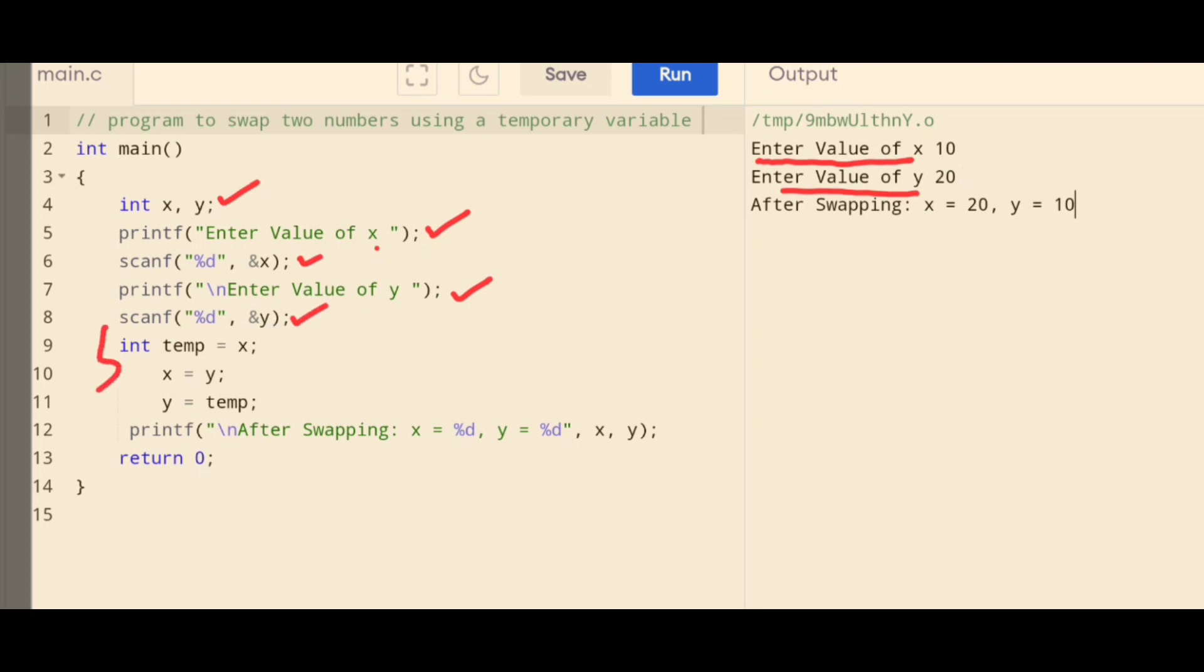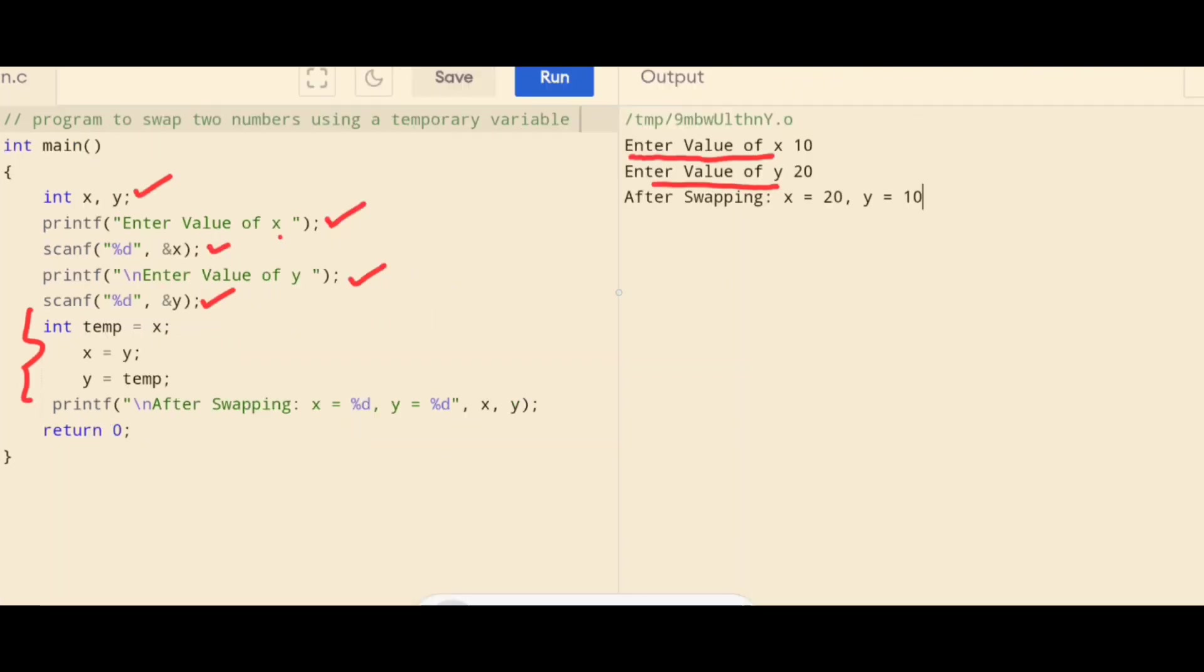I will show you with the memory locations. x and y are the two variables that are declared here of integer data type. The user is asked here to enter the value of x. So, the user has entered 10. And the user has entered the value of y as 20.